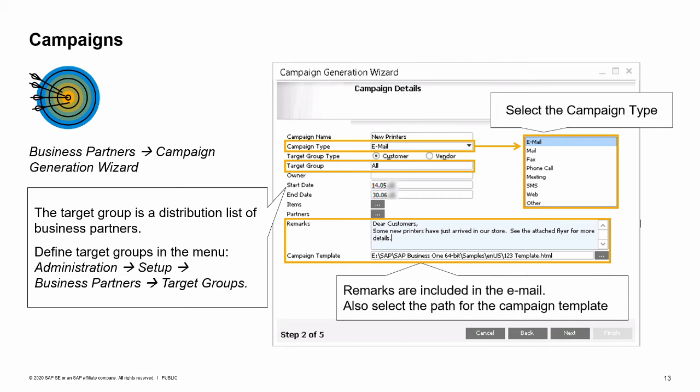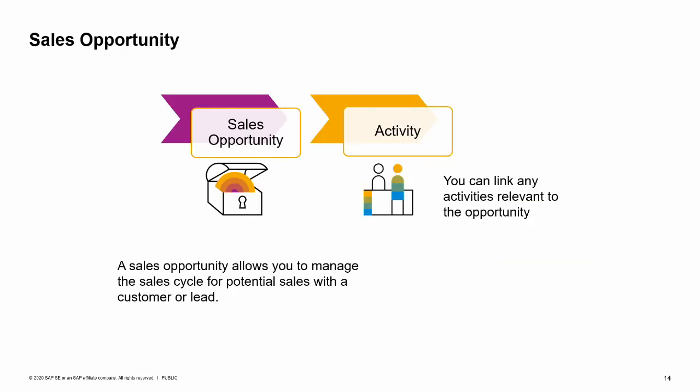Activities are often linked to sales opportunities. A sales opportunity allows you to manage the sales cycle for the opportunity of potential sales with a customer or lead. For example, a customer inquires about certain products your company is selling — you can respond immediately by creating a sales opportunity, allowing you to track the prospective sale and notify others about the status of the potential deal. As you meet with others and gather information, you can link any activities relevant to the opportunity, and view relevant activities such as a list of planned activities linked to the opportunity.